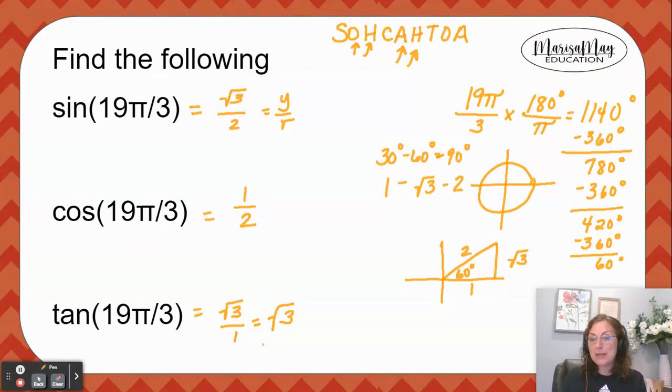Think about those angles, convert them to degrees so they make them a little bit easier to understand, and then find out how many times you had to go around and then where you land on the final rotation.